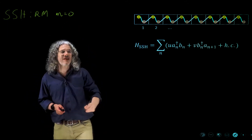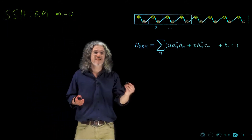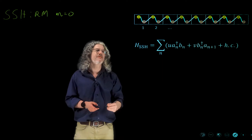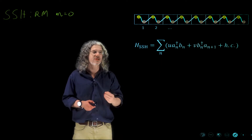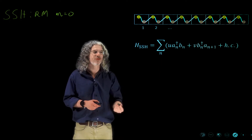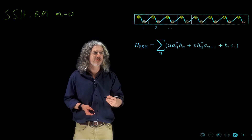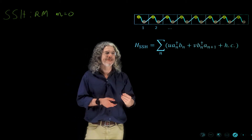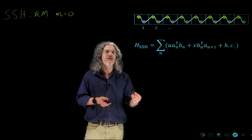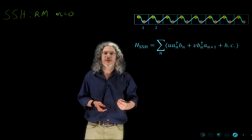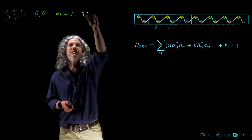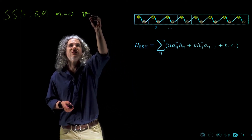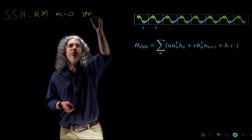Now in polyacetylene, spontaneously the system rearranges in such a way that U is larger than V or V is larger than U. So we really have a situation which is very similar to the Rice-Mele model, where V is not equal to U.